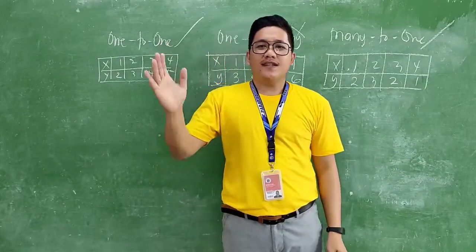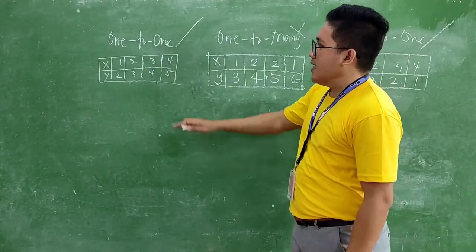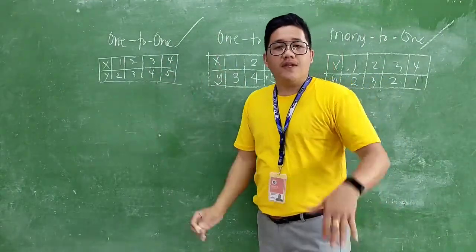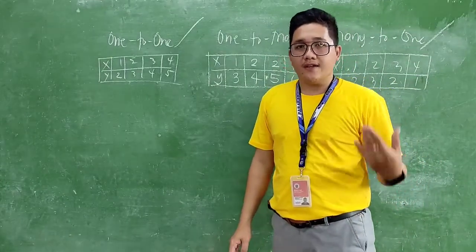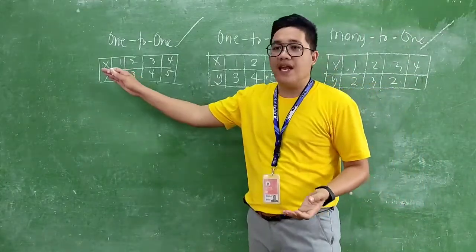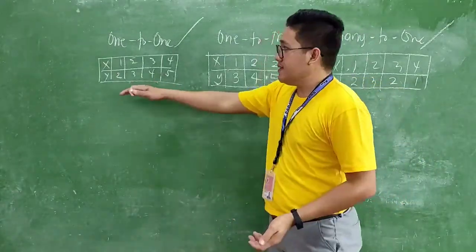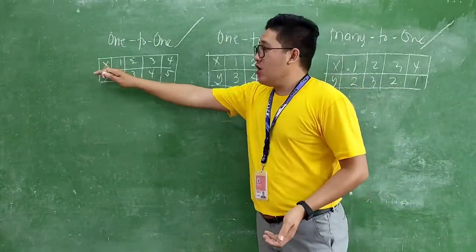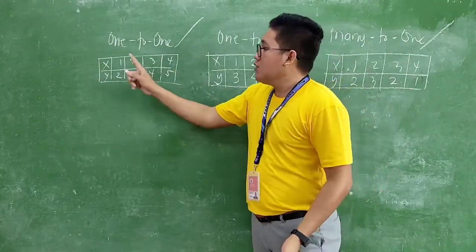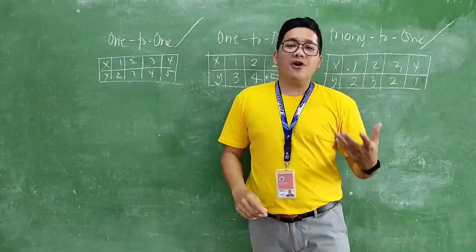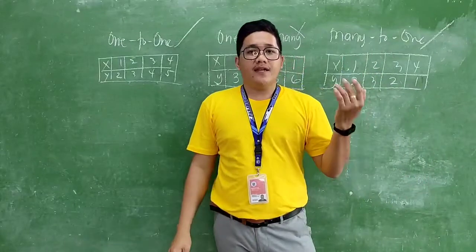Ano po ba ang domain at range? The domain consists of the x values — the abscissa or x coordinates, the first element in the ordered pair. The range consists of the y values. In this case, our domain is 1, 2, 3, 4 and the range is 2, 3, 4, 5. Ganoon lang kadali ang ating lesson — finding the domain and range. Let's now elaborate on how to find them.